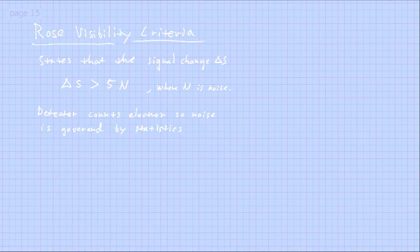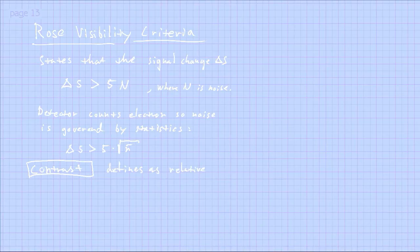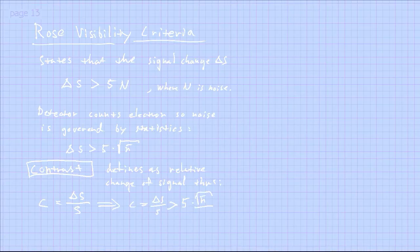Since the signal consists of discrete electron counts, noise is a statistical phenomenon. The signal change must be more than five times the square root of the average count. Relating this to image contrast — contrast is the relative change in signal compared to the overall signal — the contrast must be larger than five times the statistical noise error over the total signal count. This means the average count value must be larger than five divided by the contrast we want, squared.